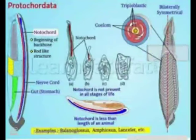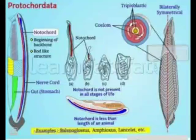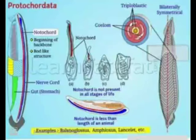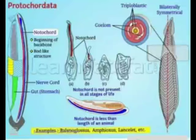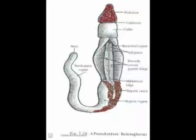The next is Protochordata. They are called Protochordata because they have a notochord, but only in the embryonic stage. Adults do not have a notochord, that is why they are placed in a separate phylum. They are bilaterally symmetrical, triploblastic, with a coelomic cavity. They have muscles for locomotion and are also marine animals. Common examples of Protochordata are Balanoglossus, Amphioxus, and Herdmania.